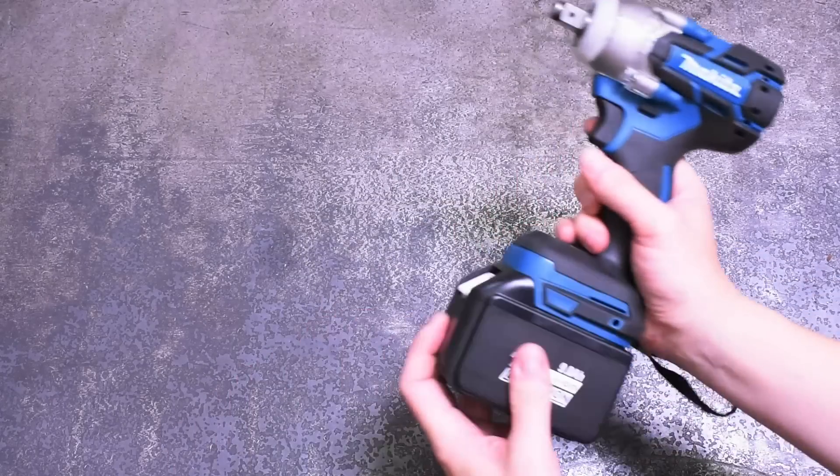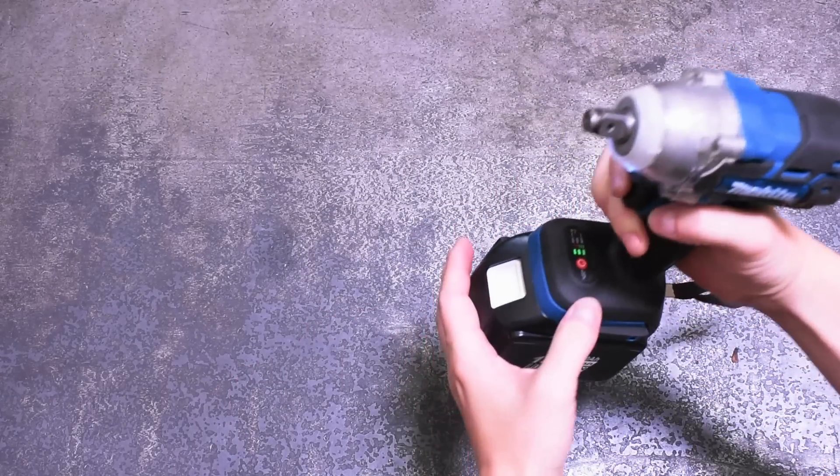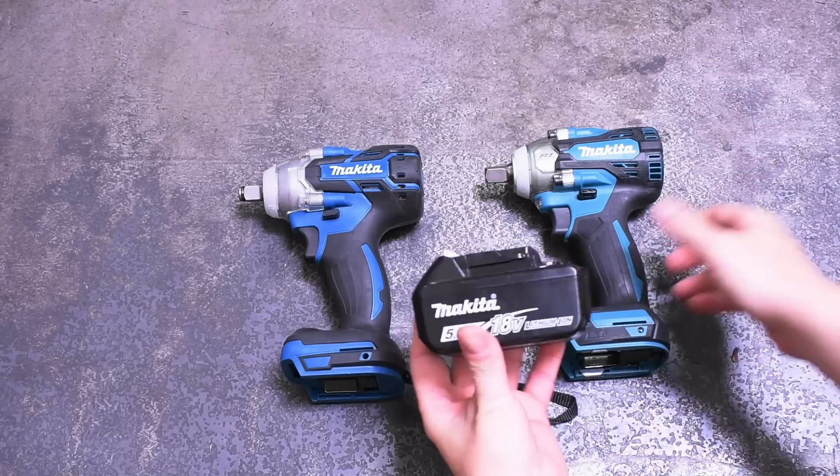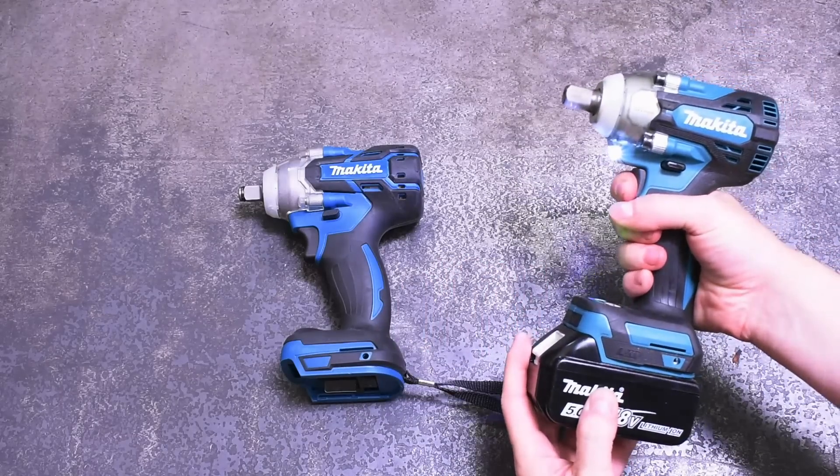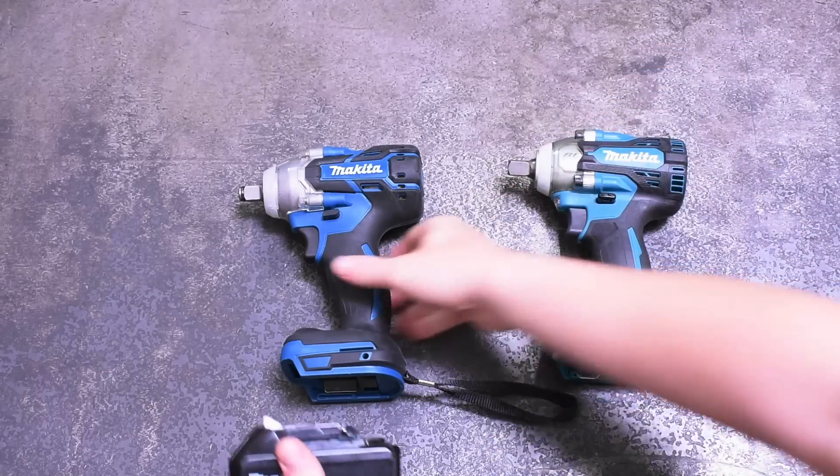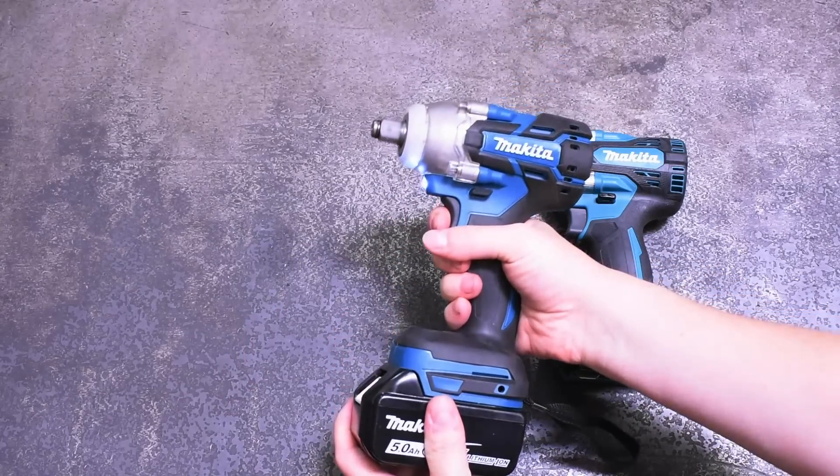Until then, during most of our tests, we'll be using the standard 5 amp hour pack we use on most of our Makita testing. We can admit one thing about the Wish wannabe though. It is at least brushless, no real sparks coming off of this one.